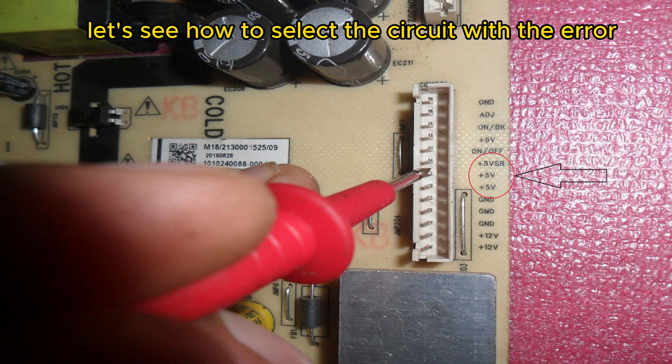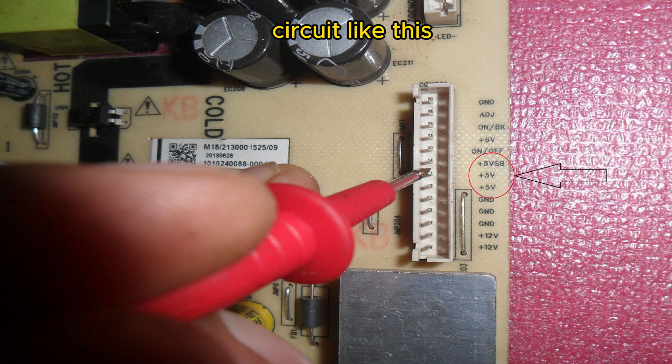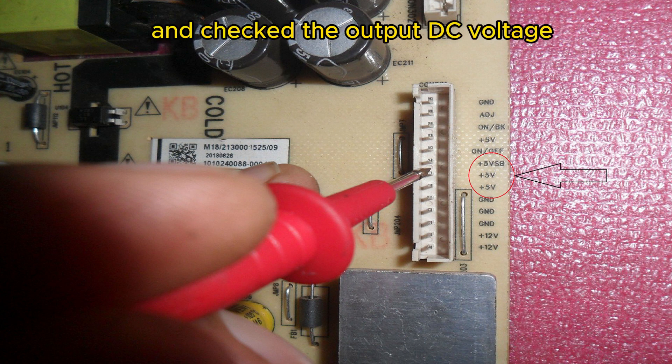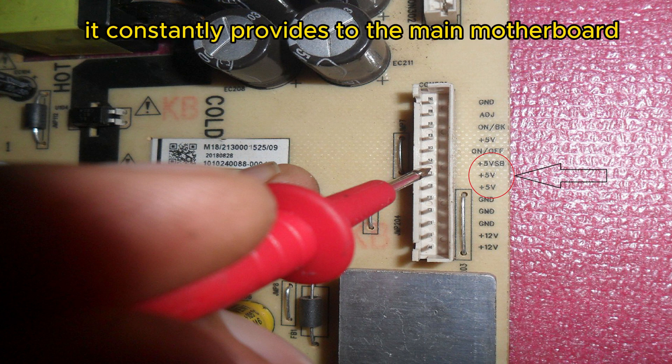Let's see how to select the circuit with the error. Because of the error no power here, I first took the power supply circuit like this and removed the wire and gave it 230 volts AC power supply and checked the output DC voltage. If the circuit is working properly, 5 volts voltage should always come here. It constantly provides to the main motherboard.